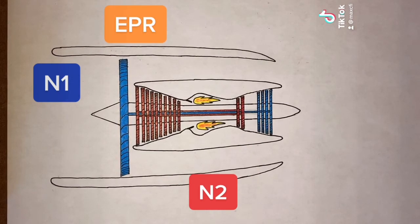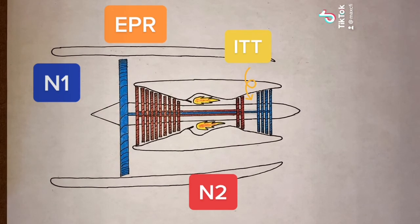There's also the Interstage Turbine Temperature, or ITT, measured here between the low and high pressure turbines. Temperatures here can climb very high and quickly cause damage if they exceed limits, so this is an important quantity to monitor.